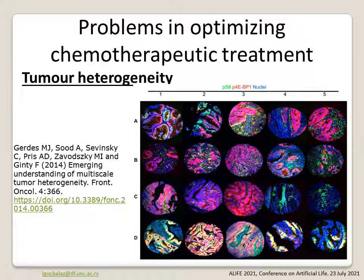On top of that, tumors are also very heterogeneous structures. Here you can see profiling of one tumor type with regard to their signaling pathways. If you only take this one dimension of heterogeneity, there are multiple aspects and patterns of it. How our drug will interact with and deal with such heterogeneity is usually unknown before you start experiments, and sometimes it can just kill the development of the drug.